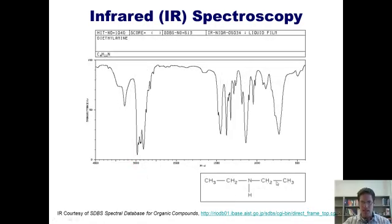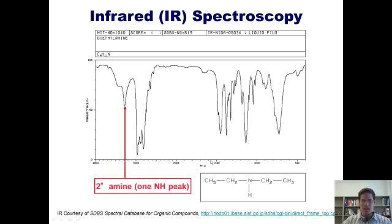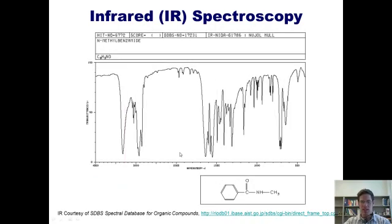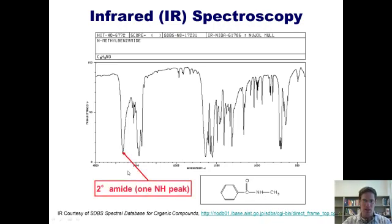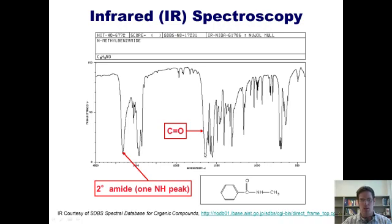Here's an IR of a secondary amine, which gives only one NH stretch down here. This compound obviously doesn't have any carbonyls, and the peaks here are caused by the CH stretches from the alkyl chains. Here's a secondary amide — there's only one hydrogen on the nitrogen, so we expect to see one peak in the nitrogen-hydrogen bond stretch region, and we do. This compound has a carbonyl, so in contrast to the secondary amine, we see the carbonyl stretch right here, around 1700 plus or minus 50.